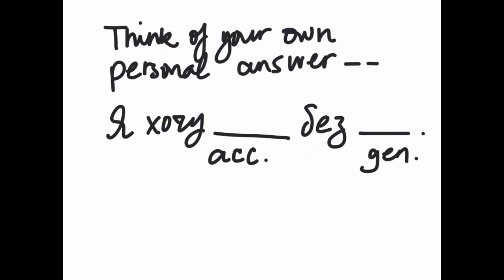Now think about your own personal answer. If you were in Russia, what would you need to say? Want something without something. Я хочу... And then the thing that you want. Accusative. Without the thing that you don't want. Genitive.